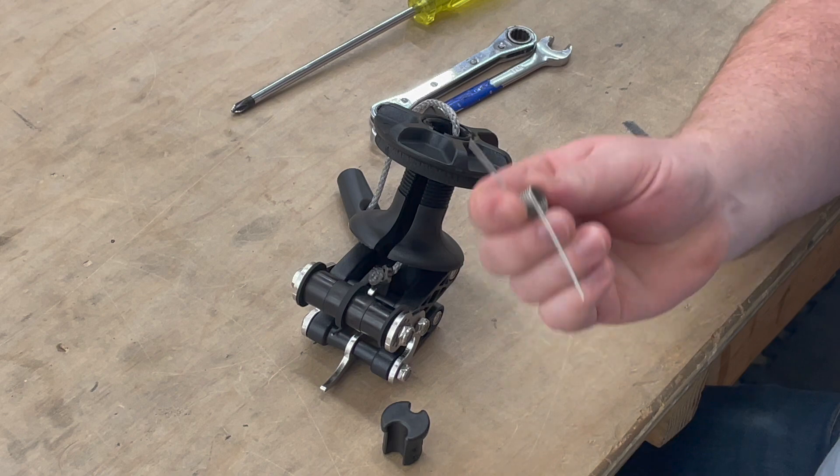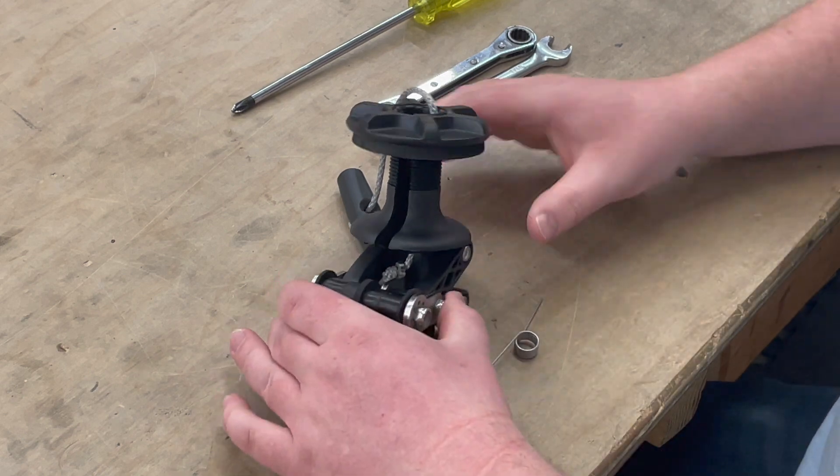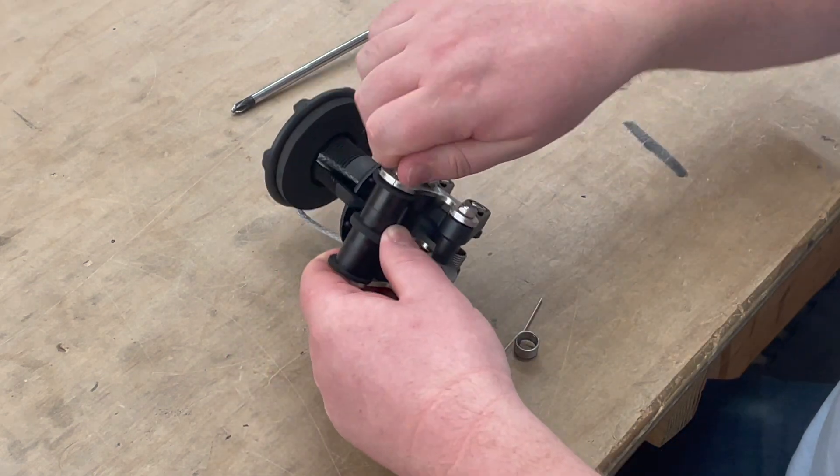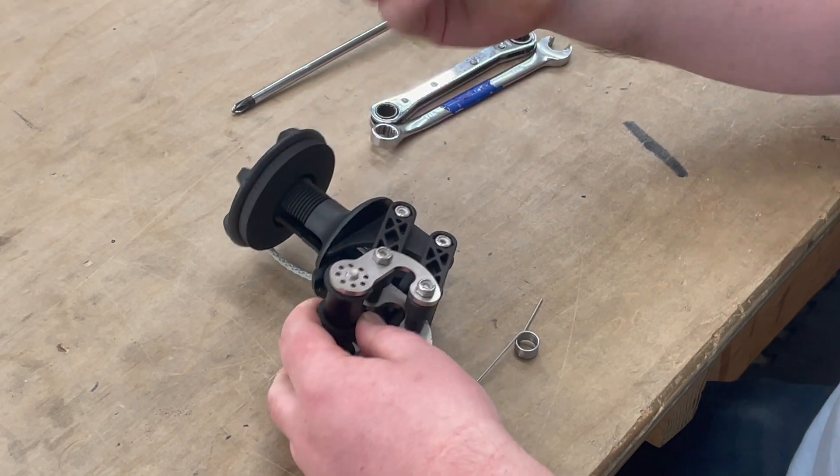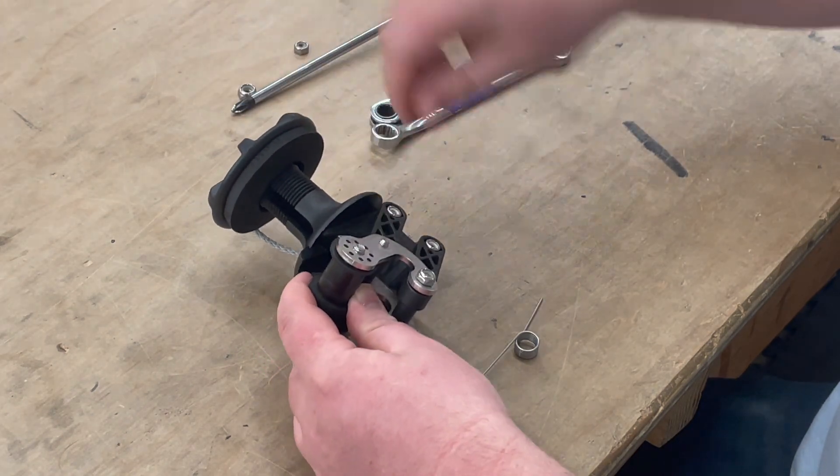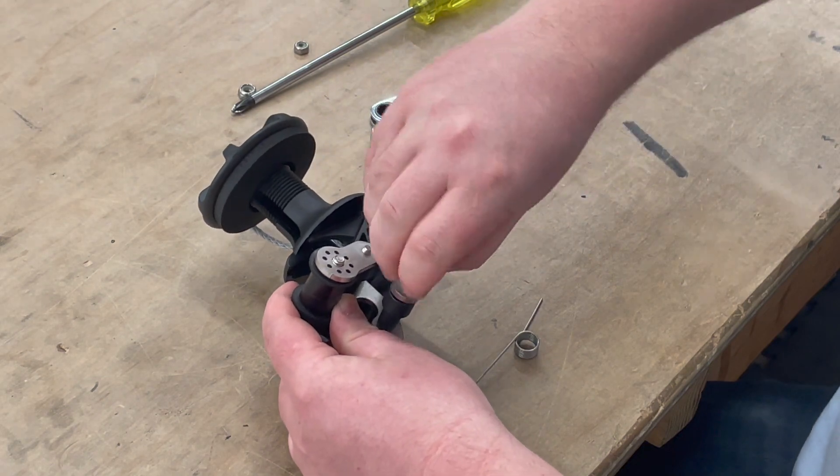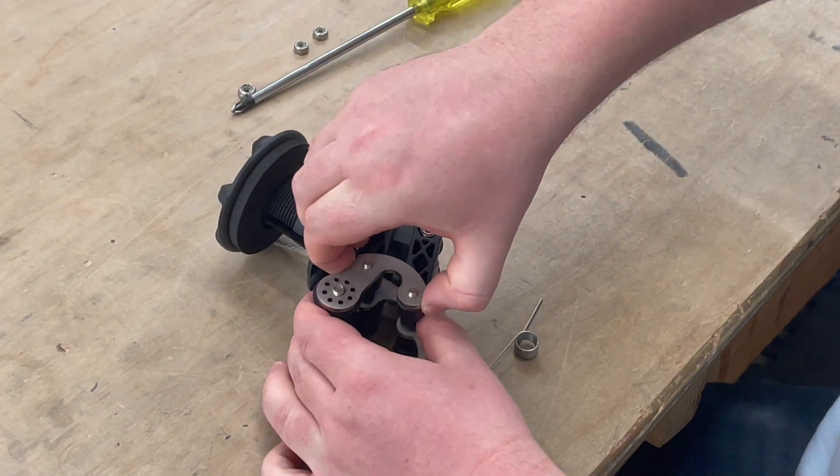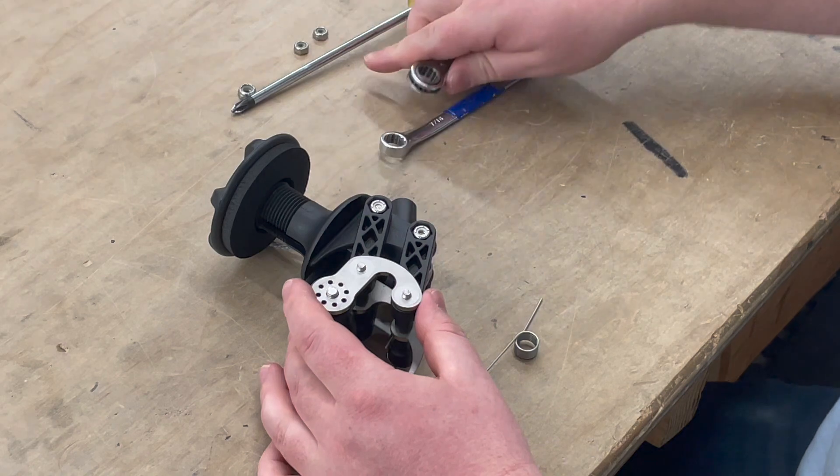So to start we'll install this new spring. To do that, you just remove the hex nuts here. These are pre-loosened. Yours might be a little tighter, so you might need an Allen wrench or something.